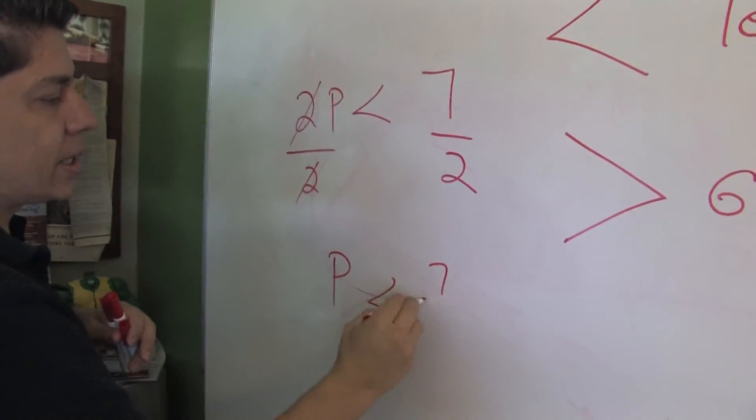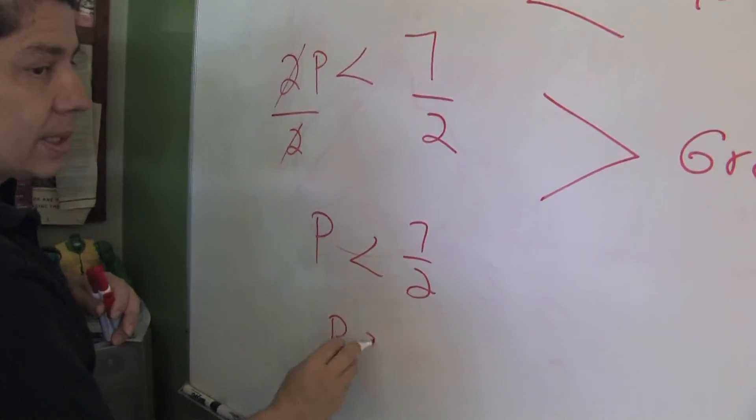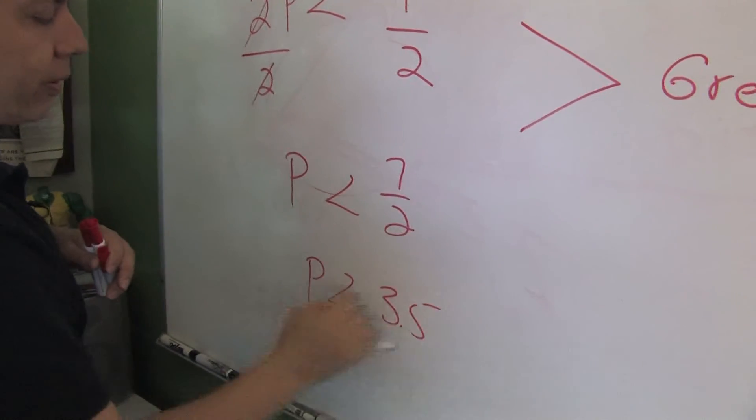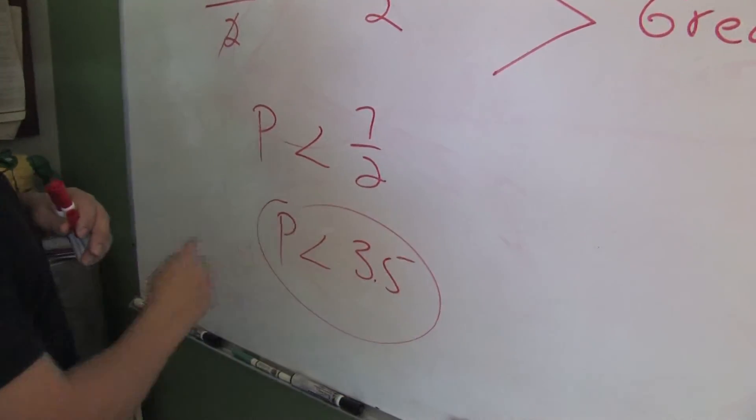So, P is less than 7 over 2, or P is less than 3.5. And that's how you calculate a basic inequality.